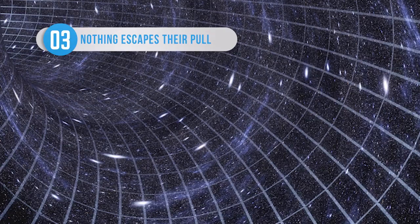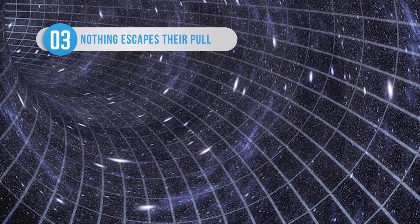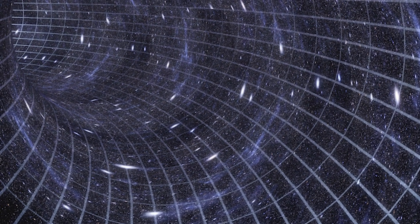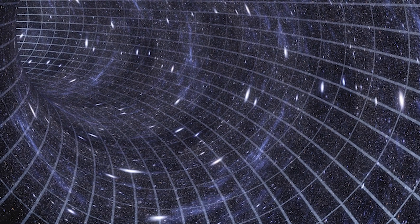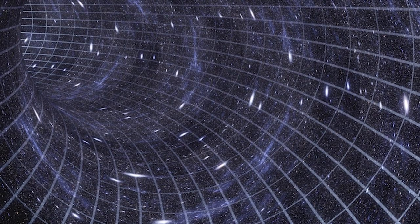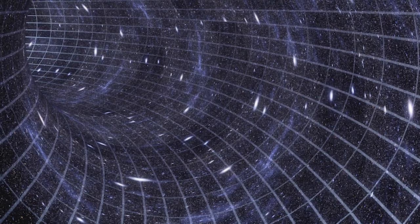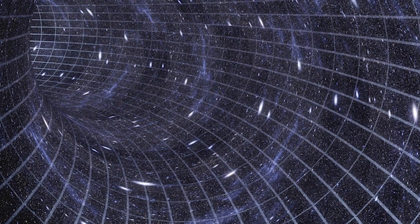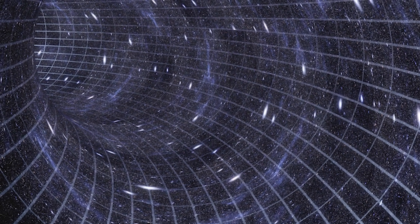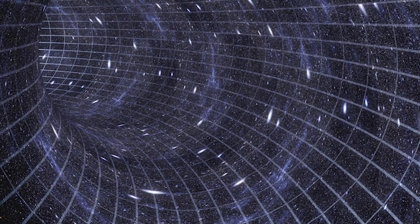When anything, even light, passes close to a black hole, it will be pulled in by its gravity. If anything else acting on the object is stronger than the black hole's gravity, then it can escape the pull until it reaches the event horizon. The only way to escape from this point is for an object to travel faster than the speed of light, which is impossible.